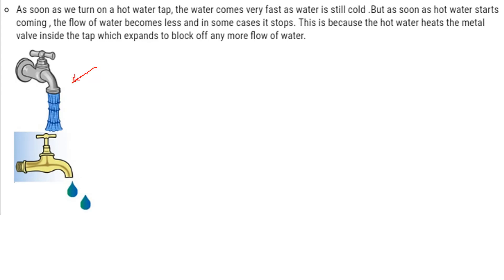Another example: on a cold freezing day, if you switch a tap from cold to hot water, the hot water heats the metal valve inside the tap, which expands to block off the flow of water — sometimes stopping it entirely. This is due to the expansion of materials because of temperature.